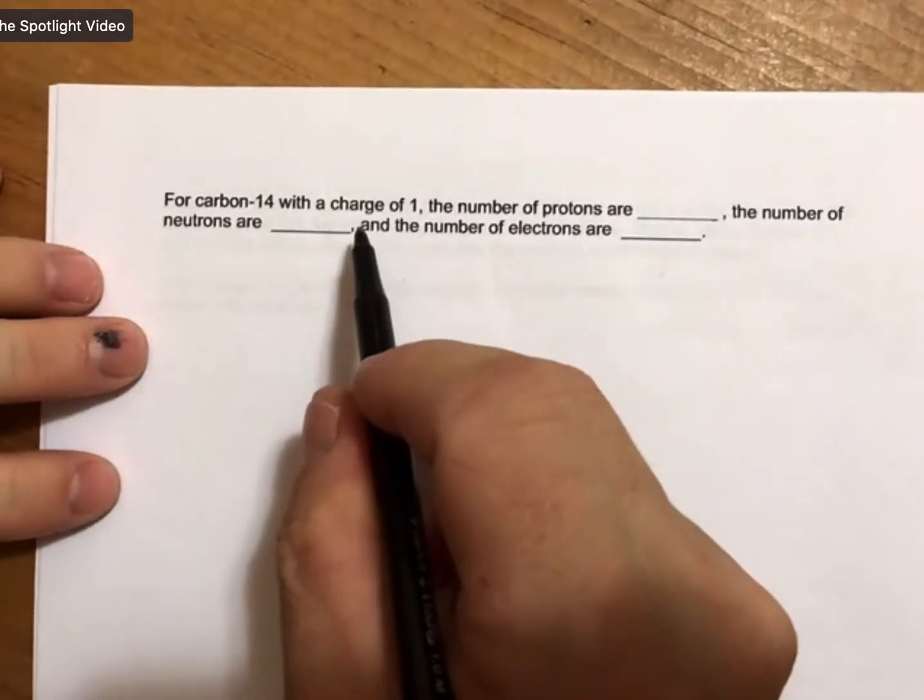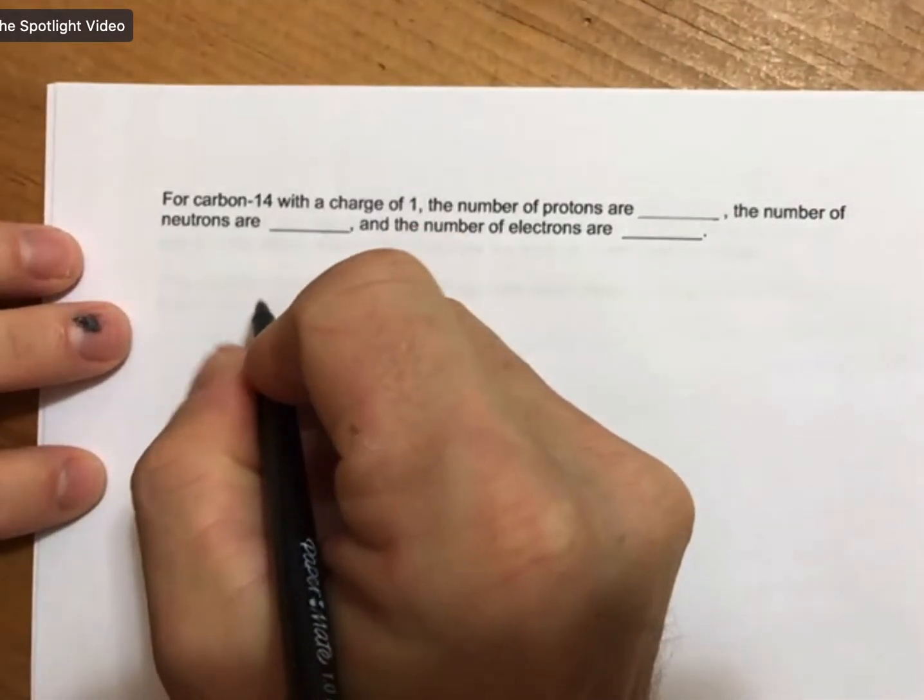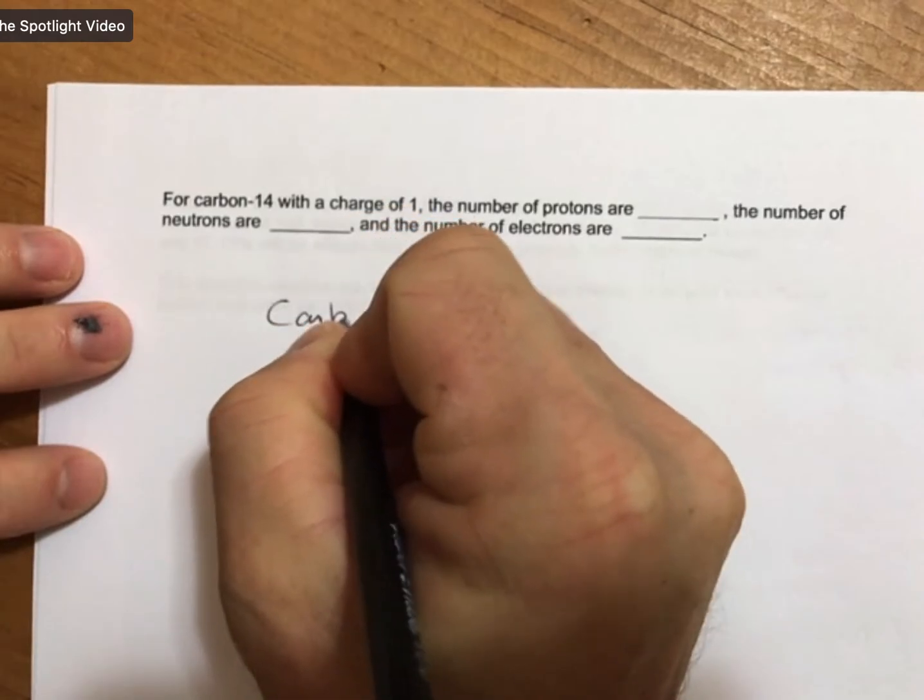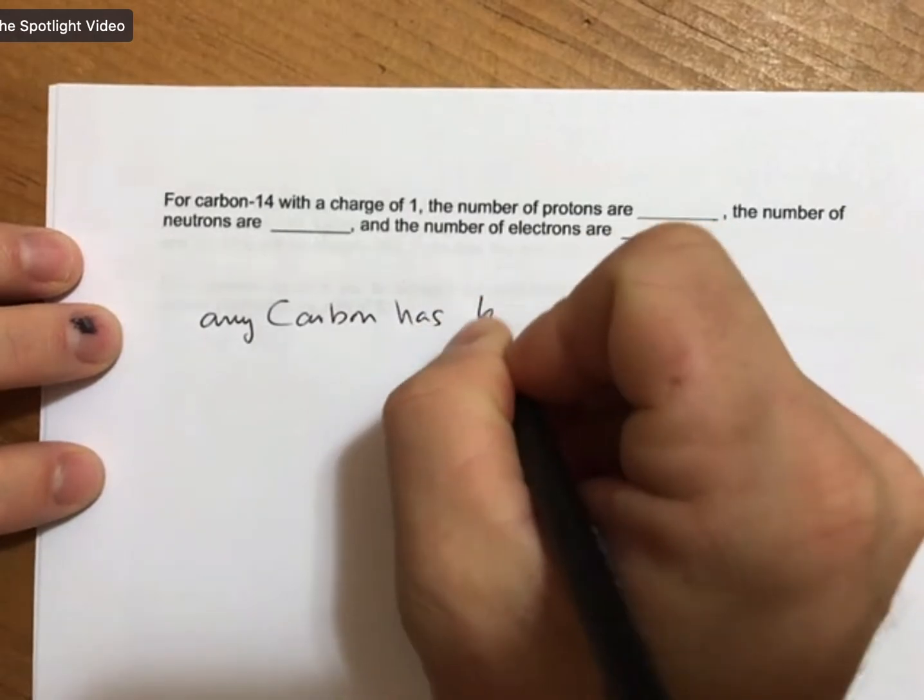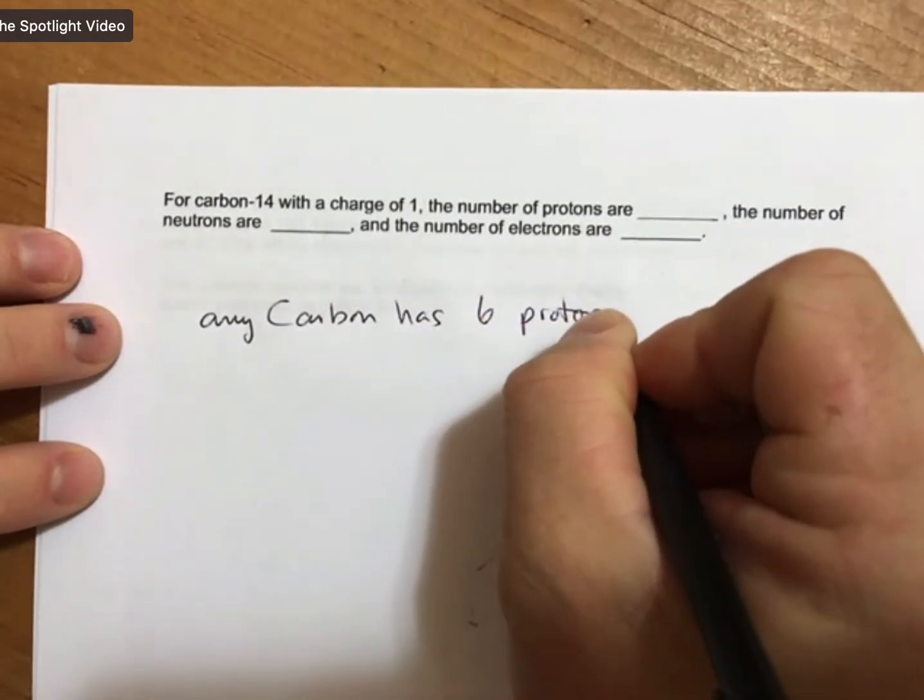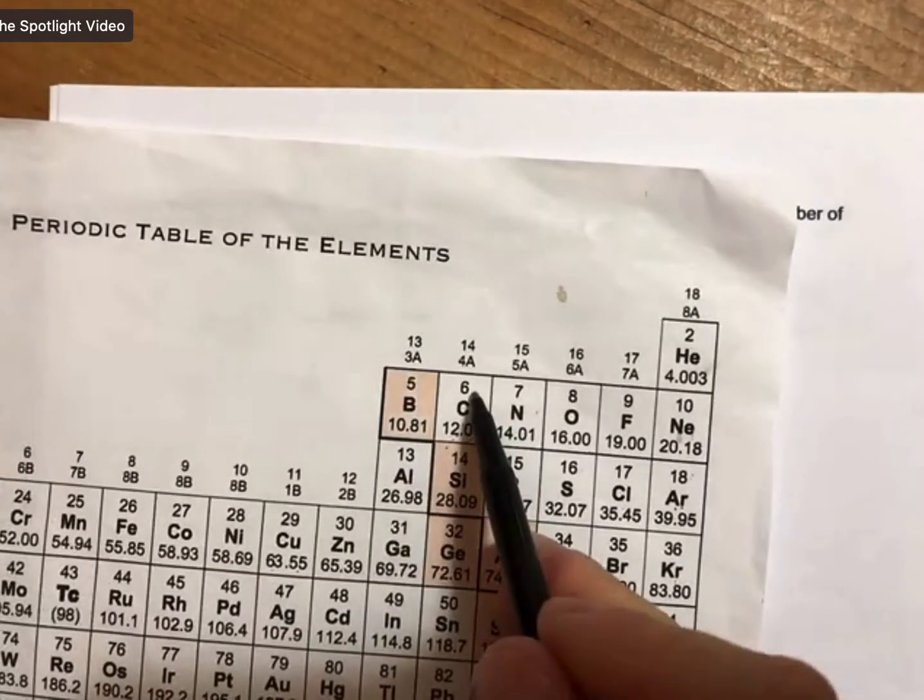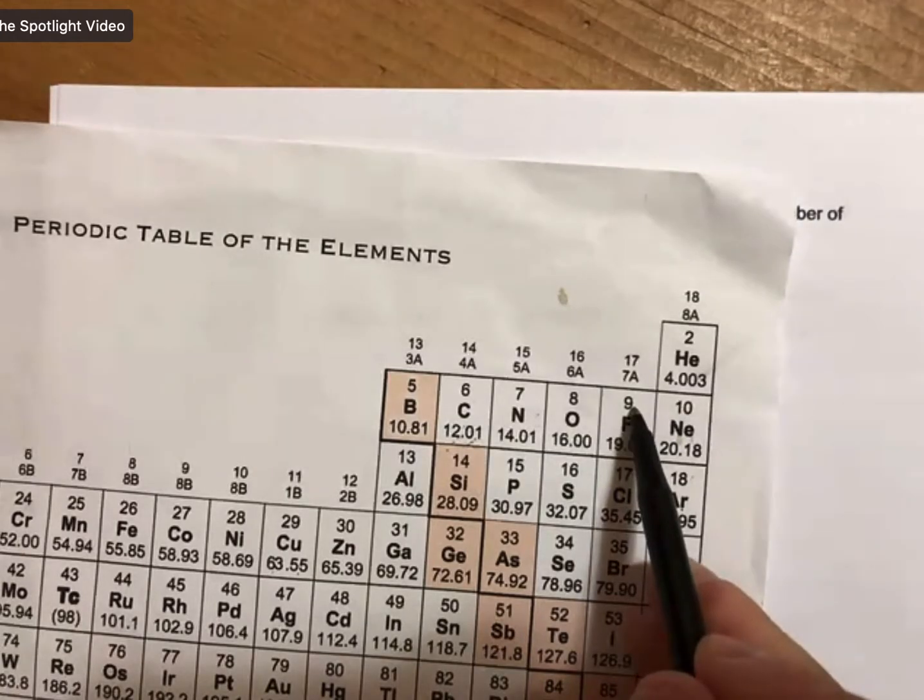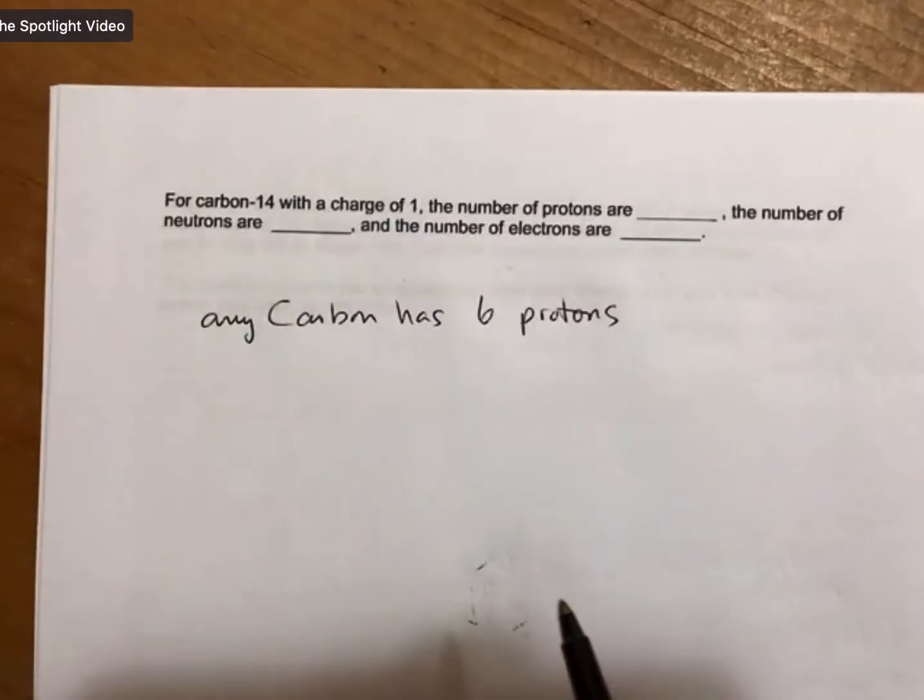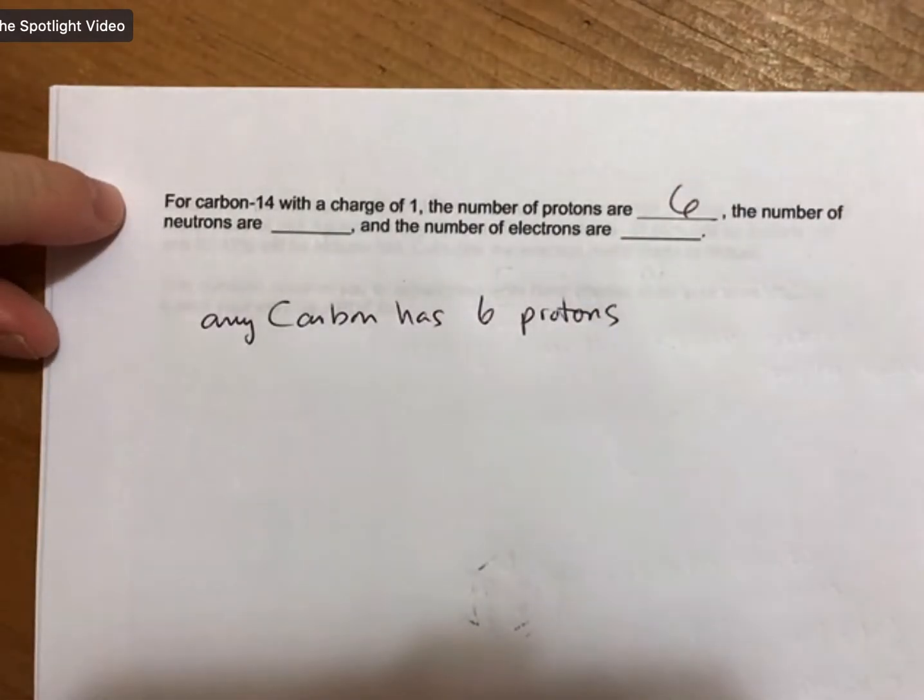So for carbon-14, let's start there. Any carbon has six protons, and that's because it's the number on the periodic table. That's what defines carbon. Any fluorine has nine protons, etc. So we'll put a six in there.